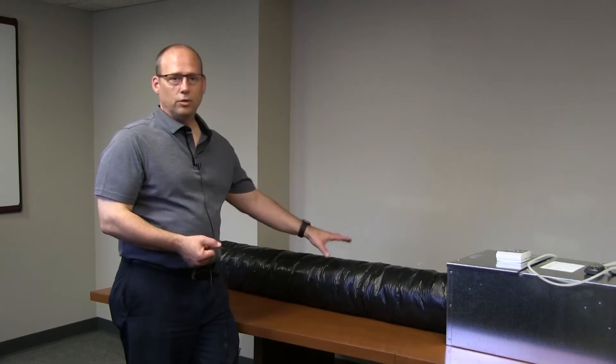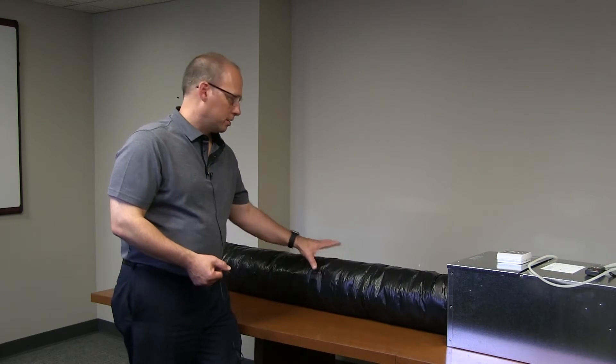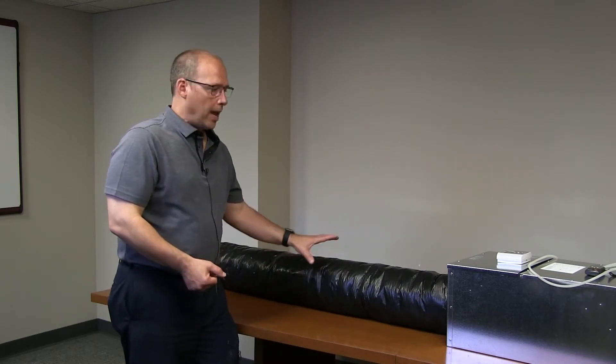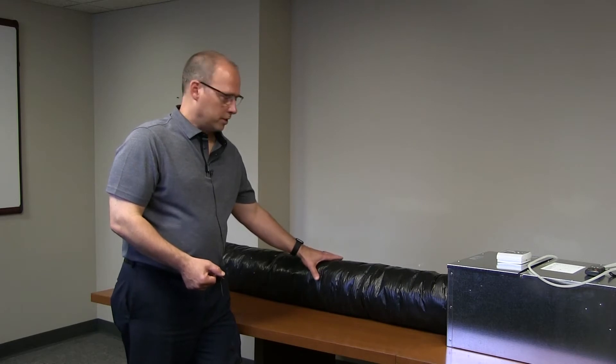So if you don't take the measurement at the inlet hood, the other thing that the ResNet 380 standard allows is for you to take a mid-duct measurement. There's a couple ways to do this. Number one, the standard says to use an airflow station. That really requires that you have a hard piece of sheet metal somewhere in your duct system. This system is flex duct, as most are, and it's not always convenient to put an airflow station.